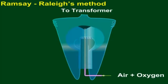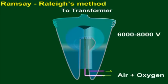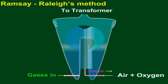Two platinum electrodes are introduced and a discharge from a transformer of about 6000 to 8000 volts is passed, by the action of which nitrogen and oxygen rapidly combine to form oxides of nitrogen.